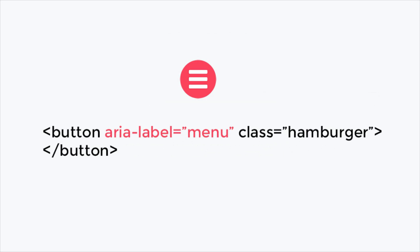Aside from alt tags on links, it is also important to make sure your site icons have what is called ARIA labels. ARIA labels inform the programs and software that people who are sight impaired use as to what the purpose of that image is.